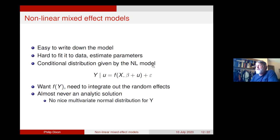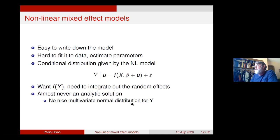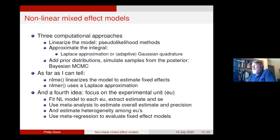Why is nonlinear mixed effects modeling so much harder? The conditional distribution is easy — just a nonlinear function depending on both betas and random effects. But like with the linear mixed effects model, I need the marginal distribution, which means integrating out those random effects. The things that make it possible to get that large multivariate normal distribution no longer hold true. That integral is almost never an analytic solution, and there is no nice multivariate normal distribution for y unless you have a very special structure in your model.